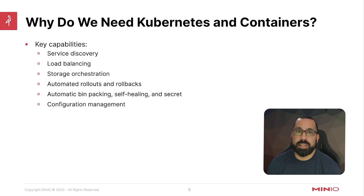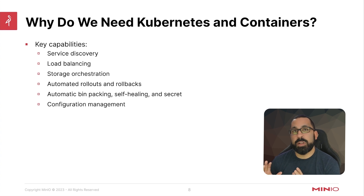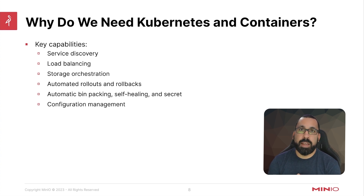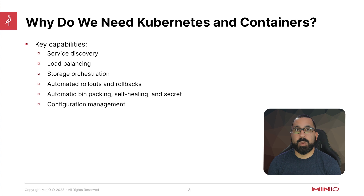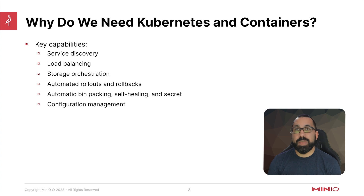So why do we need Kubernetes and containers? The key capabilities here are service discovery, load balancing, storage orchestration, automated rollouts and rollbacks, automatic bin packing, self-healing, and secrets and configuration management. Everything that you would have to do on a VM or a physical machine when you were just running Linux — updating packages, making sure there were no conflicts — by bringing all those elements inside the container and making that portable around your infrastructure, you can easily port that into different systems, whether it's different cloud providers or on-premise deployments, and scale out very easily without a lot of manual work.